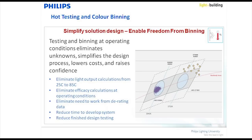People are unhappy when the color is not what they expected. The LED industry is now moving to testing LEDs at 85 degrees. That is really important to keep in mind — 85 degrees is what new testing is all about. Products tested at 25 degrees may be at certain color points, but at 85 degrees they shift and should land on the black body line.